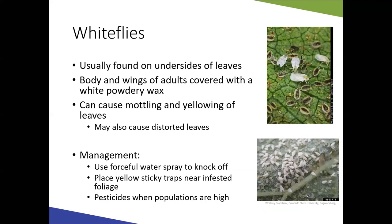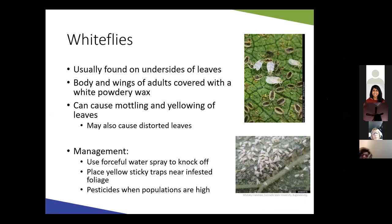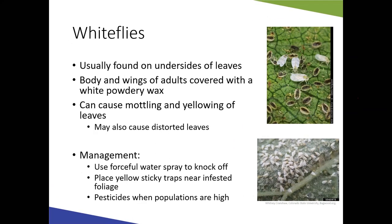Whiteflies are small insects typically found on the underside of leaves. Their bodies and wings are covered in a white powdery wax — that's how they get their name. Like aphids, they have sucking mouthparts that extract plant juices, causing yellowing and leaf distortion. Populations really spike in July and August when it gets hot and humid. A forceful water spray can help manage them, as can yellow sticky traps for scouting and trapping. Severe infestations may require pesticides.